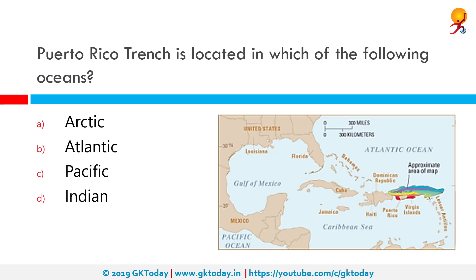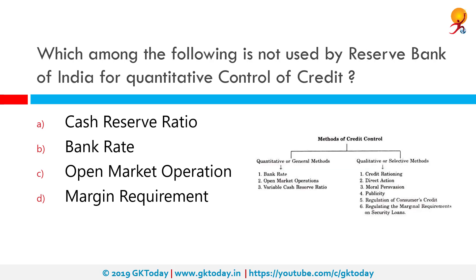The correct answer is the Atlantic Ocean. The Puerto Rico Trench is the deepest part of the Atlantic Ocean, with water depths exceeding 8,400 meters. Its depth is comparable to the depth of trenches in the Pacific Ocean. It is the second deepest trench after the Mariana Trench.